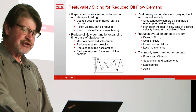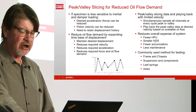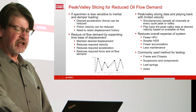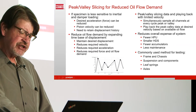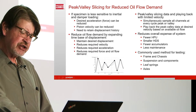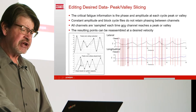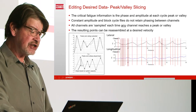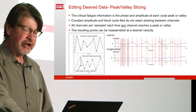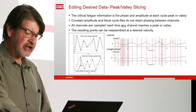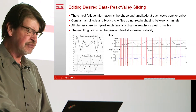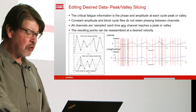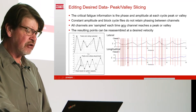That allows us to reduce the overall expense of the system — fewer pumps, smaller hydraulic distribution system, fewer accumulators, less overall maintenance, less power at the door. It's a commonly used method for testing frame and chassis, suspension and components, leaf springs and axles. Here we show a multi-axial file with an example of peak valley slicing. The critical information is phase and amplitude at each peak or valley, so we slice all channels whenever any one channel reaches a peak or valley. The resulting points can be reassembled at whatever desired velocity based on our oil flow capability.